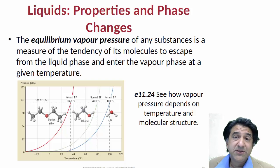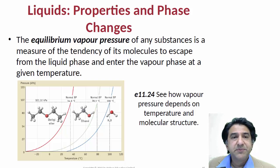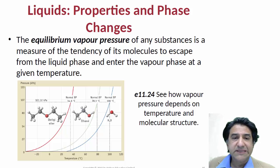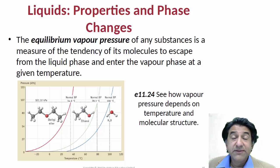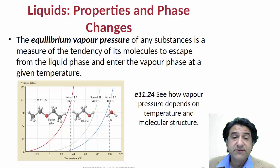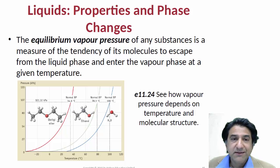Hi, welcome to Chemistry 1001. We're talking about states of matter. This particular topic is about the equilibrium vapor pressure. What is it? Well, if you listened to the previous lecture, you will have understood that whenever there's a liquid, an equilibrium of the gas above it, there's a vapor above the liquid. And this vapor has a pressure. That's called the equilibrium vapor pressure.